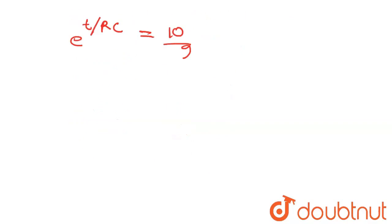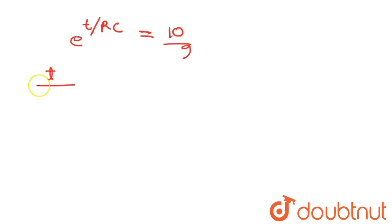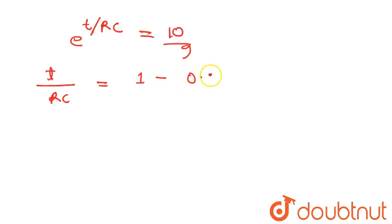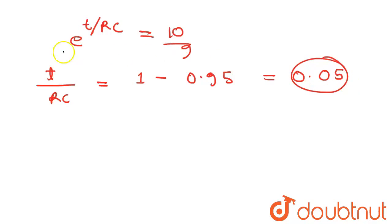Taking the natural log on both sides: t over RC is equal to log 10 minus log 9. The value of log 10 is 1 and log 9 is approximately 0.95, so t over RC is approximately equal to 0.05.